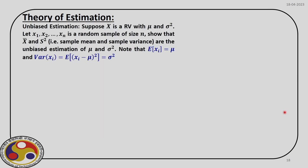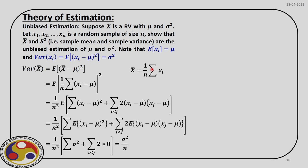Now with that background, let us consider an example. Suppose we have a random variable x whose population parameters are mean mu and standard deviation sigma (variance sigma-squared). We have n samples, and from those we try to estimate the sample mean and sample variance, and check whether they are unbiased or biased estimations of the population mean mu and variance sigma-squared. Our sample mean is the summation of all x_i divided by n. We can verify whether this x-bar is an unbiased estimator of the mean. Now let us take the variance — it is the second central moment, the expected value of (x − mu)².